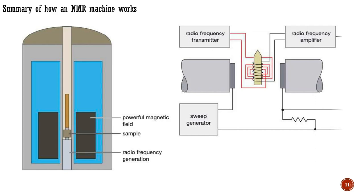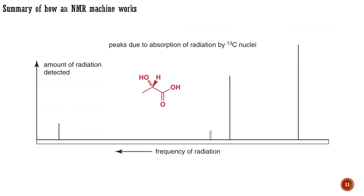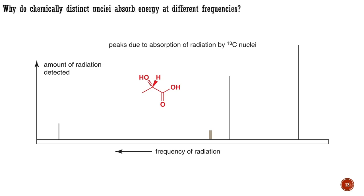Some nuclei absorb the energy and are promoted to a higher energy level. When the pulse finishes, the radiation given out as the nuclei fall back down to the lower energy level is detected using what is basically a sophisticated radio receiver. Finally, after lots of computation, the results are displayed in the form of number of absorptions against frequency. In the spectrum shown here, each peak represents a different kind of carbon atom — each one absorbs energy or resonates at a different frequency.